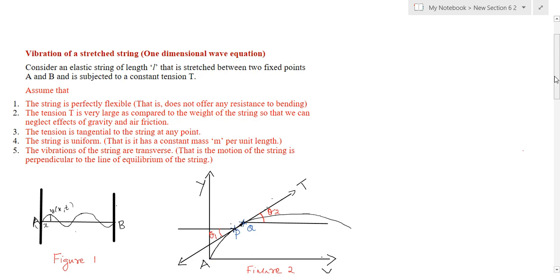We derive this wave equation under certain assumptions. The assumptions are: the string is perfectly flexible; the tension T is very large compared to the weight of the string so that we can neglect effects of gravity and air friction; the tension is tangential to the string at any point; and the string is uniform and the vibrations of the string are transverse.